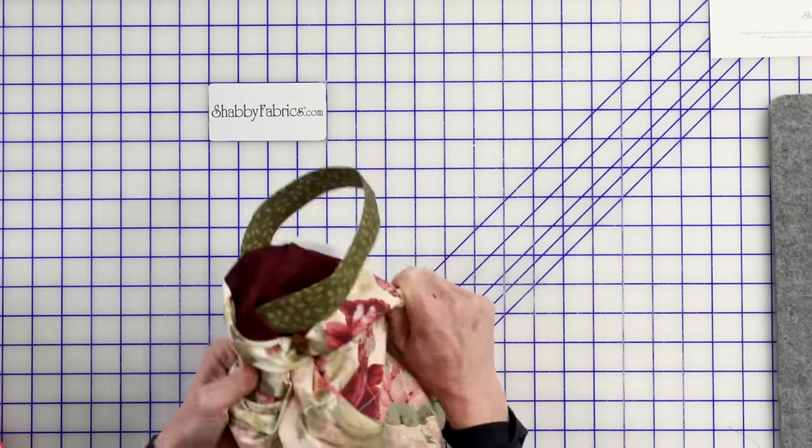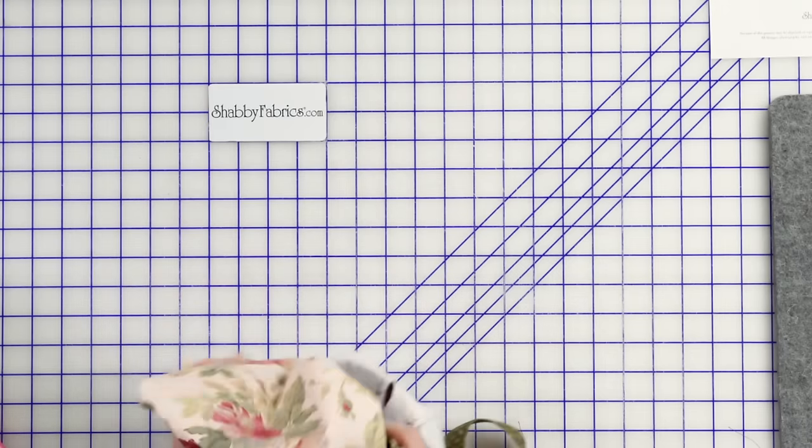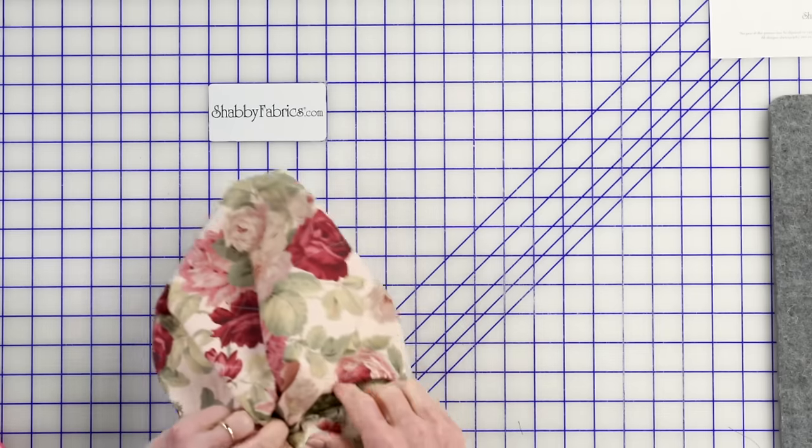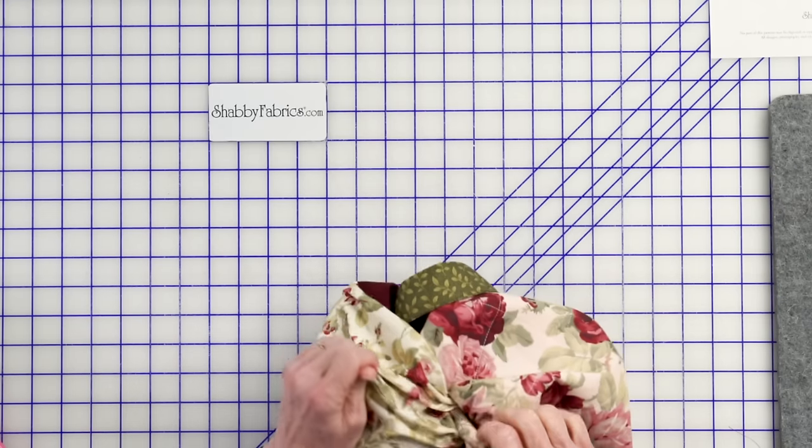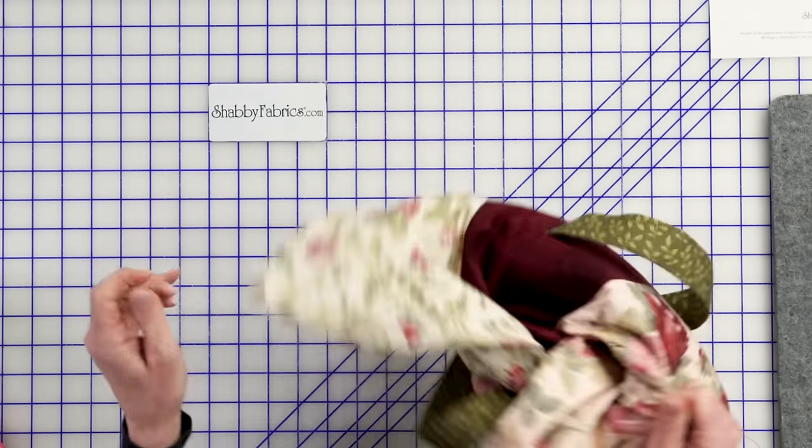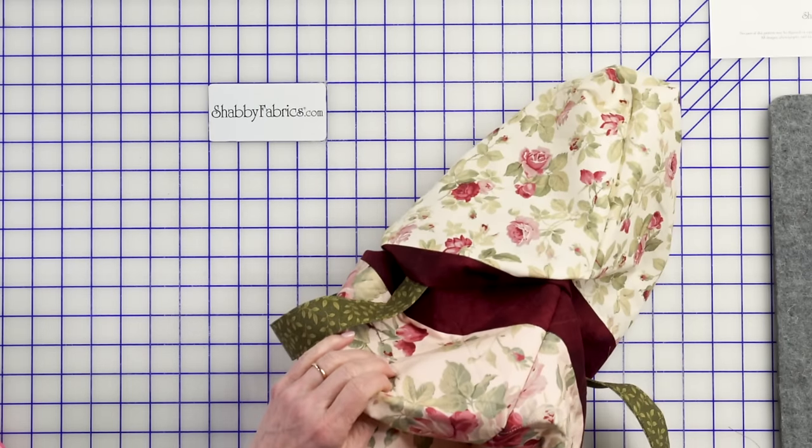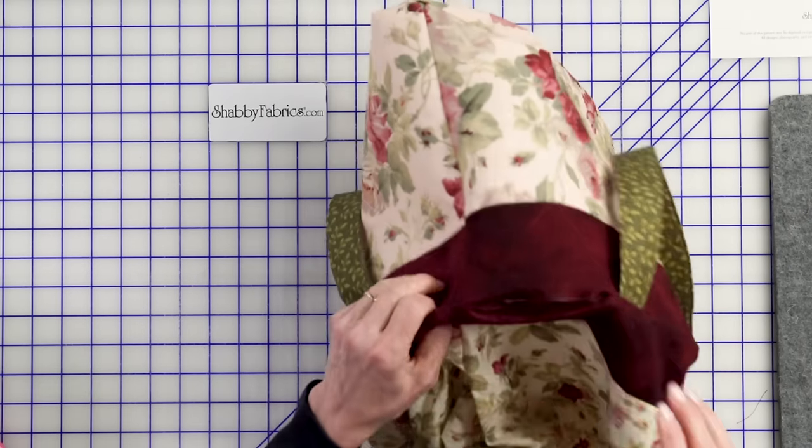You could do applique on the main part of the bag, too. You could put a monogram, an initial, just some ideas. We have shabby shapes. You may have seen those on the website. All kinds of fun things that you could be doing. They have fusible webbing on the back, so you could be buying those and appliquéing something to the main part of the bag. And it's just another fun way to add a new dimension.